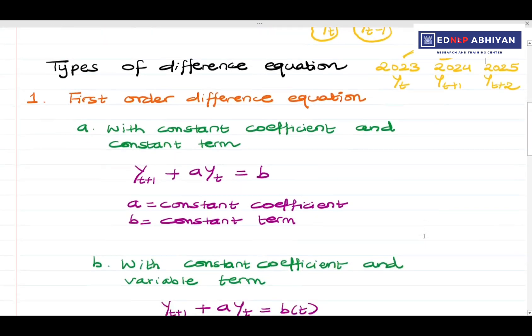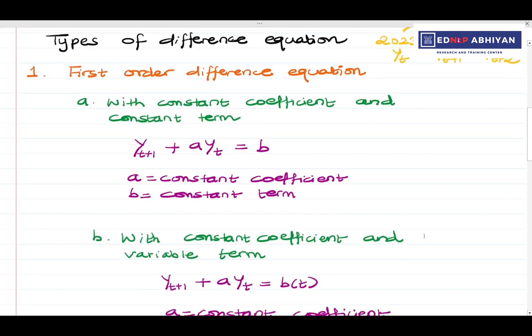A first order difference equation has certain types. That is: first order difference equation with constant coefficient and constant term.